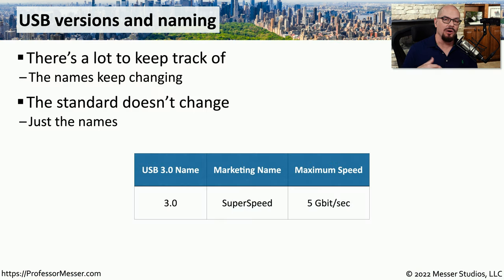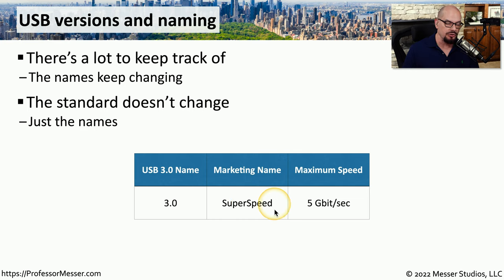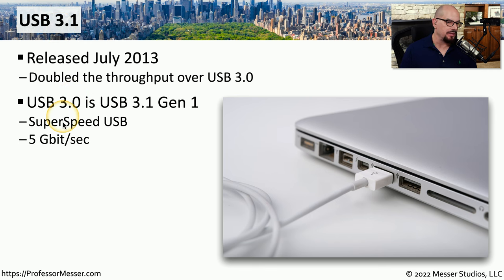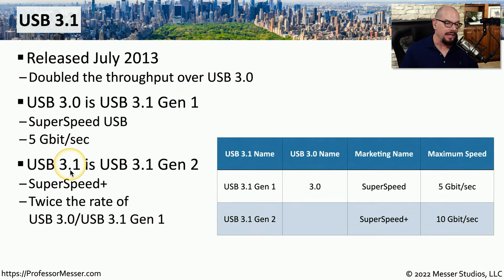As the USB standards change, we're also changing the names of how we refer to these different connections. Each time there's an update to USB, all of those connection types are renamed to meet the new standard. USB 3.0 is referred to as SuperSpeed and has a maximum speed of five gigabits per second. When USB 3.1 was released, USB 3.0 was renamed to USB 3.1 Gen 1 — still SuperSpeed USB at five gigabits per second. USB 3.1 itself is technically called USB 3.1 Gen 2, or SuperSpeed+, and supports a maximum throughput of 10 gigabits per second.